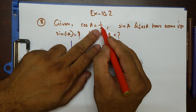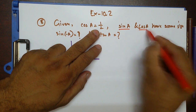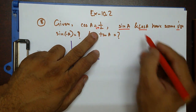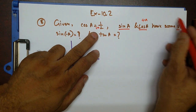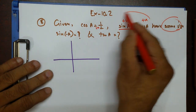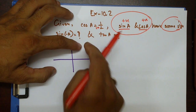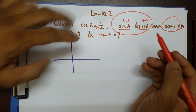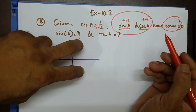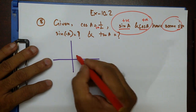Cos a is positive, and since sine a and cos a have the same sign, sine must be positive as well. Cos is positive in two quadrants: the first and the fourth. But in the fourth quadrant, sine is negative. So the angle must lie in the first quadrant.